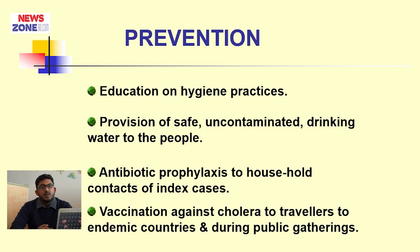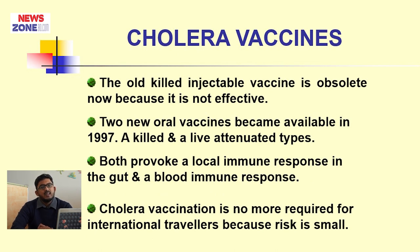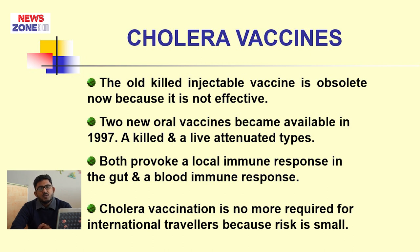Prevention of cholera: education of hygiene practices, provision of safe and uncontaminated drinking water. Antibiotic prophylaxis to household contacts of index cases, and vaccination. Regarding the cholera vaccine: the previously used old injectable vaccine is no longer used because it is known to have no effective protection. Two new oral vaccines are available from 1997 — a killed and a live attenuated vaccine. Both provoke local immune response in the gut and blood immune response. Cholera vaccination is no longer required for international travelers because the risk is small.